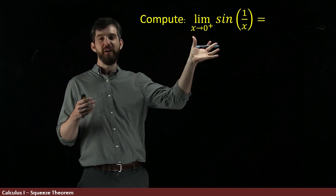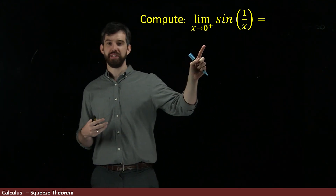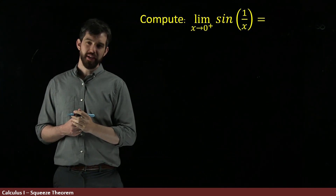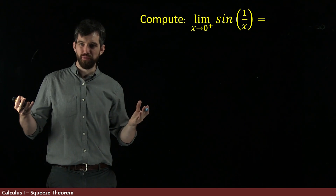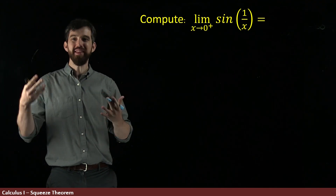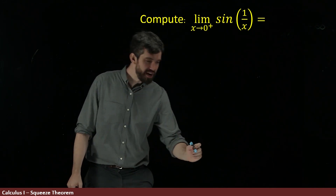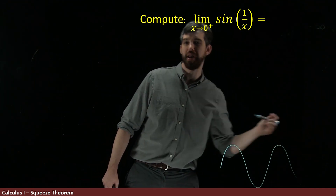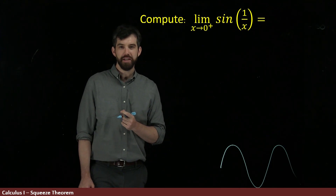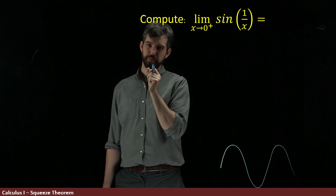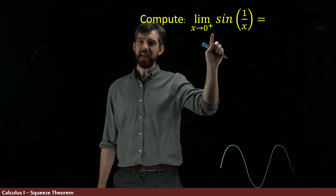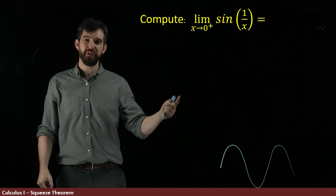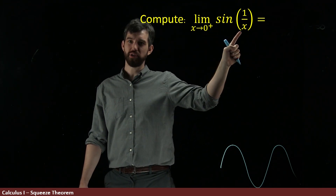Let's investigate this somewhat funky limit. We're taking the limit as x goes to zero from the right — that's what the plus denotes — of sine of one over x. So I want to figure out what the graph of sine of one over x actually looks like. Let me first think about what sine of x looks like: it goes up and down repeatedly. Now for sine of one over x, we're taking numbers really close to zero, so one over a number really close to zero is a really large number — for example, one over 0.01 is 100.